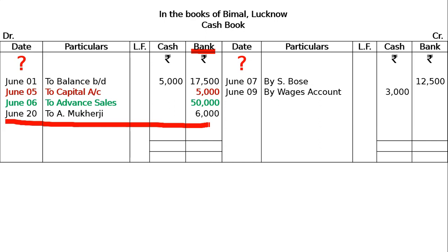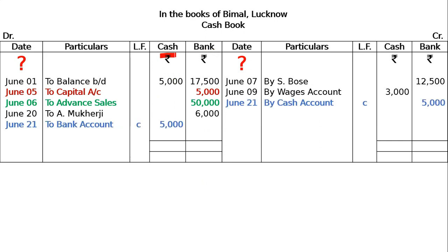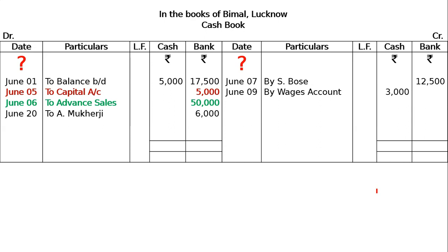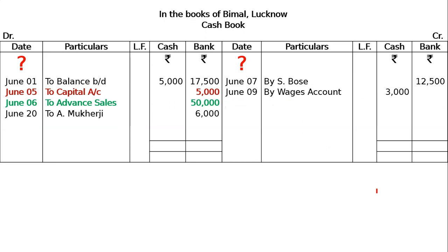June 21st — drawn from bank. This is a contra entry: drawn from bank means cash account debited to bank account. Cash side shows the receipt from bank, and bank side shows the payment to cash. This is withdrawn from bank for office use.